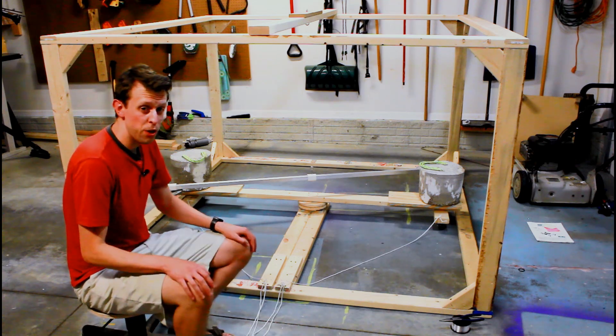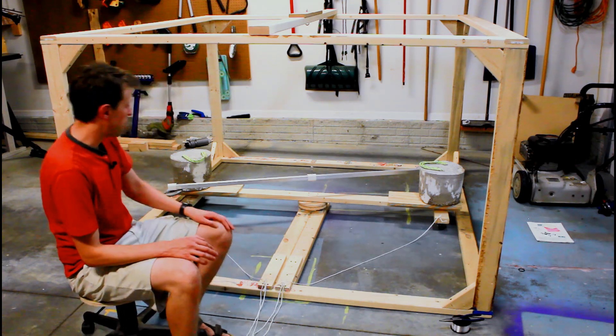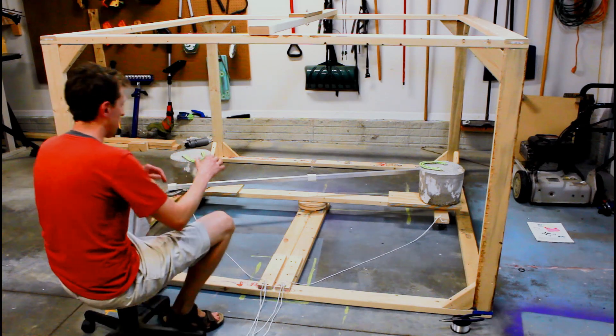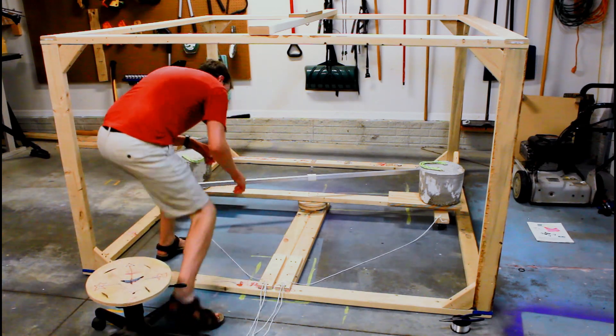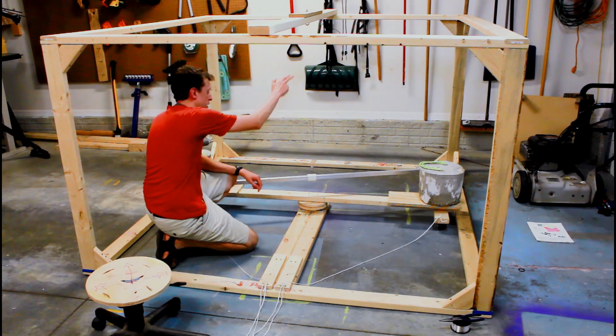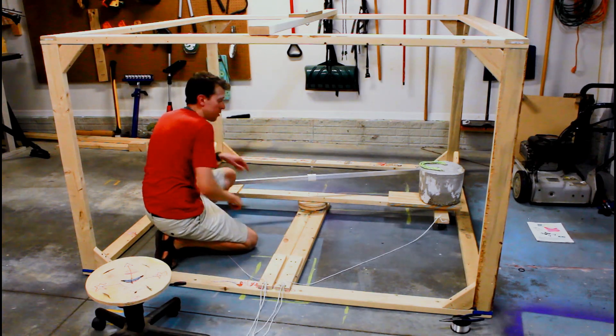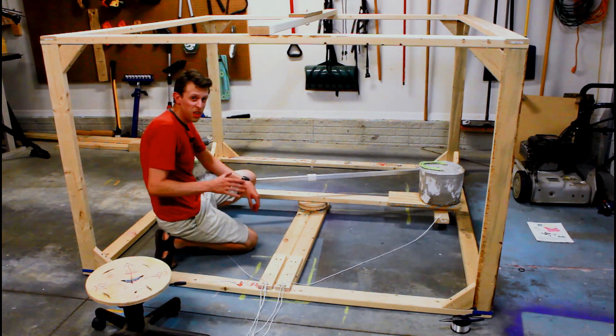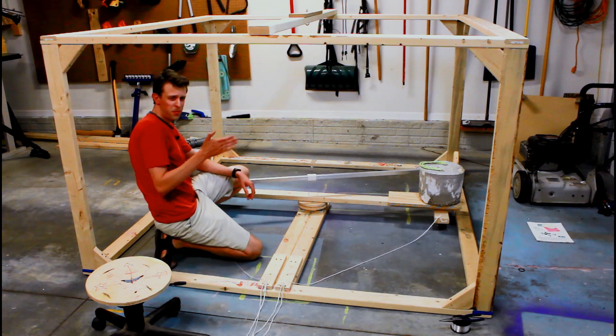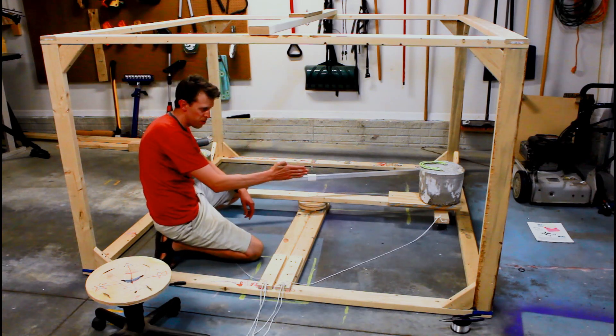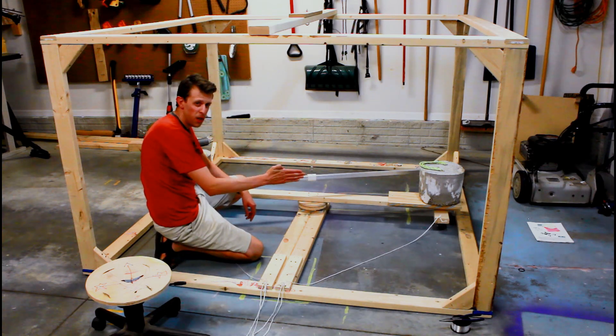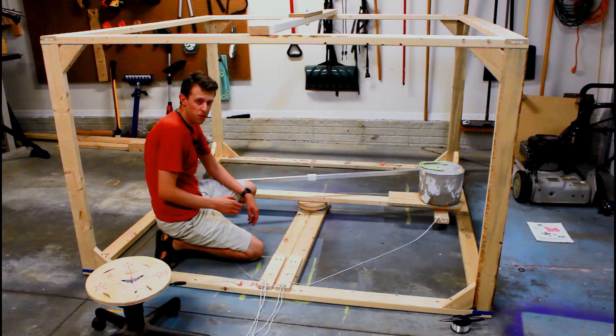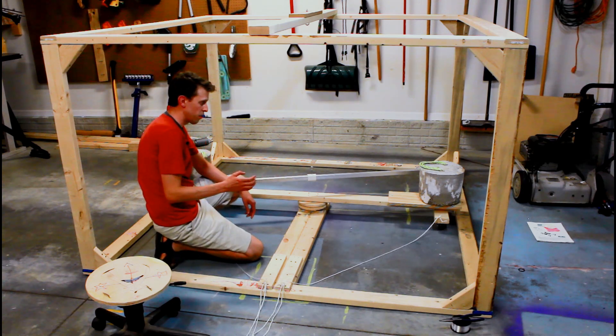Now the heart of the Cavendish experiment is that we have this torsional pendulum hanging down, and so that's down here. Got the rod out to either side, and there's weights hanging down on both sides of that. Now that's going to oscillate slightly back and forth, and we're going to figure out where that's oscillating around, what point that's oscillating around.